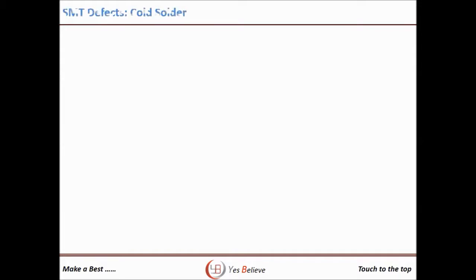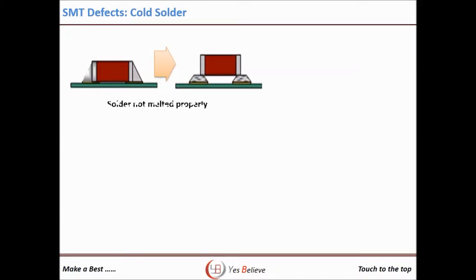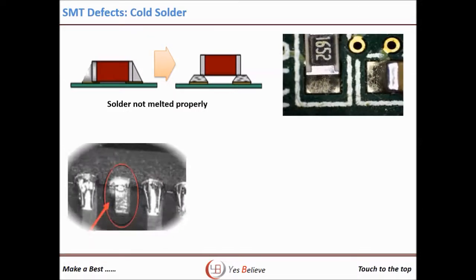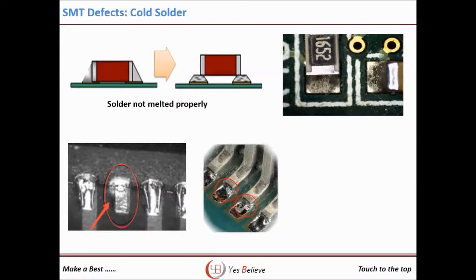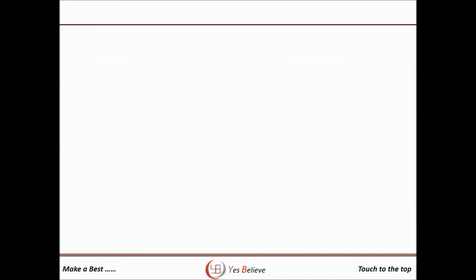Cold solder is a defect related to the soldering process. It is caused by insufficient temperature settings at the reflow oven. It occurs when the melting of solder paste is not done properly. Maximum persons are unable to detect this defect — they call it no solder or a dull shine.